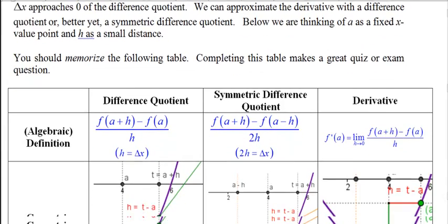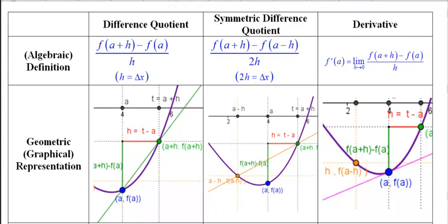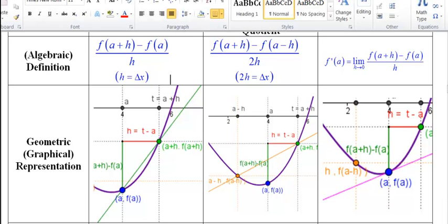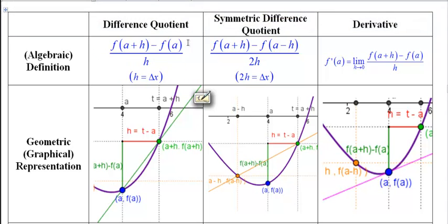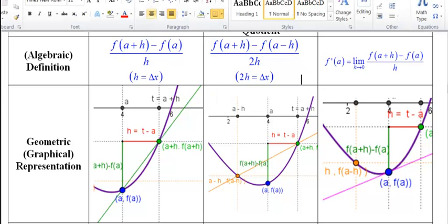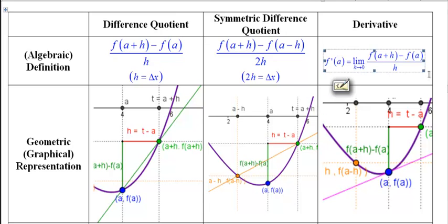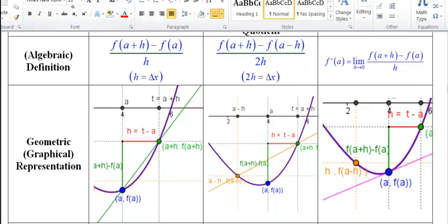Okay, so first of all, here's the first part of the table: the algebraic definition. f of a plus h minus f of a over h, that is the difference quotient. Notice here that h represents delta x, and so that is the difference quotient, and it's really just the slope formula.